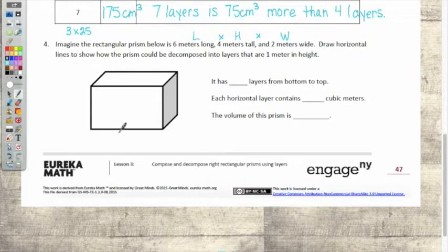So let's label it and then we'll read the rest of the directions. Six meters long. Four meters tall. Two meters wide. Do you agree? Yes. Okay.